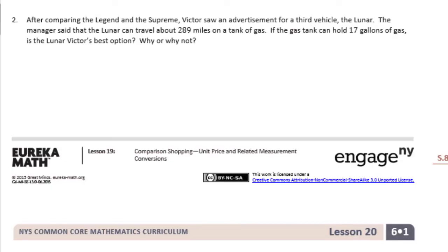So let's figure out the Lunar, how many miles per gallon it would get. So it gets 289 miles and can hold 17 gallons of gas. So let's see how much one gallon of gas can take us. Let's do 289 divided by 17.